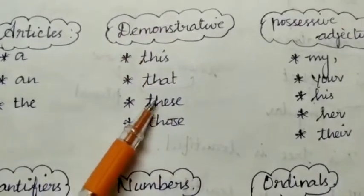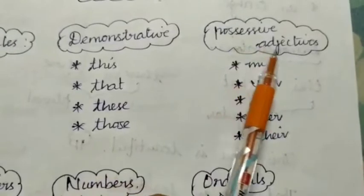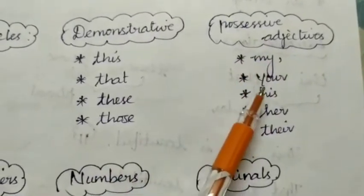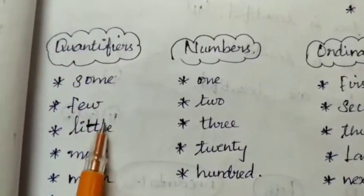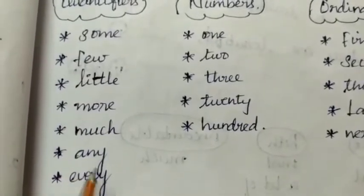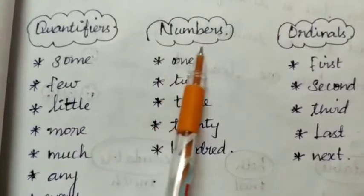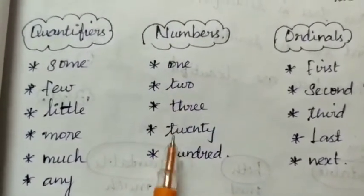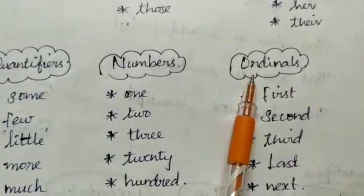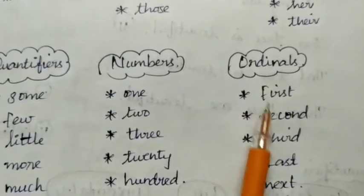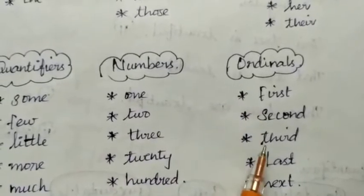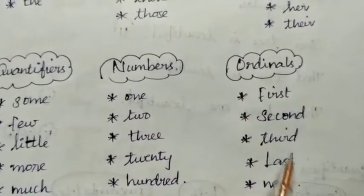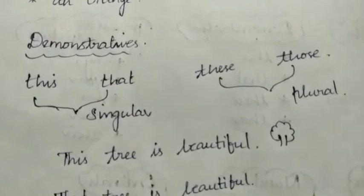Words under demonstratives: this, that, these, those. Possessive adjectives: my, your, his, her, their. Quantifiers: some, few, little, more, much, any, every. Numbers: 1, 2, 3, 20, 100, etc. Ordinals: 1st, 2nd, 3rd, last, next. We have already seen articles — now let's move on to the second type.